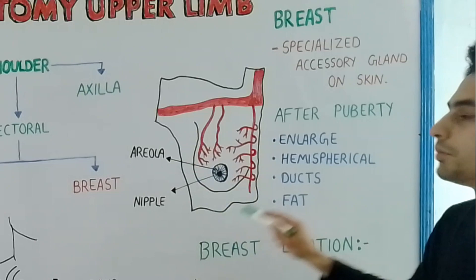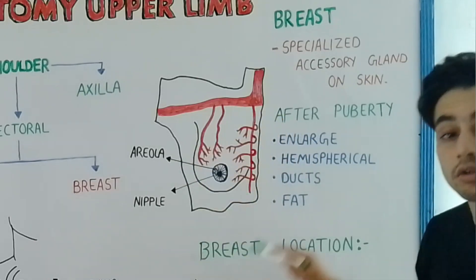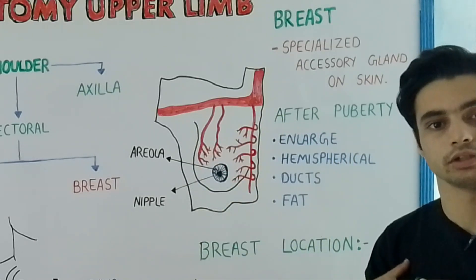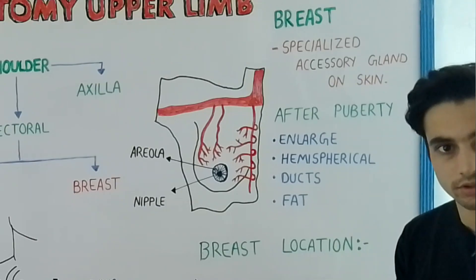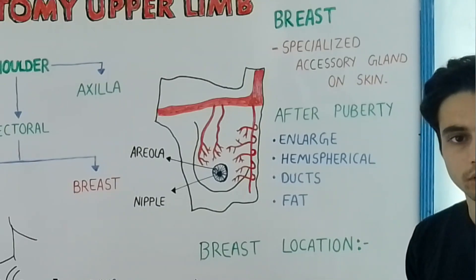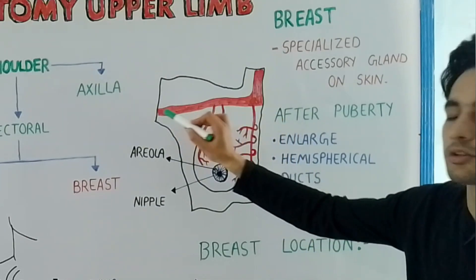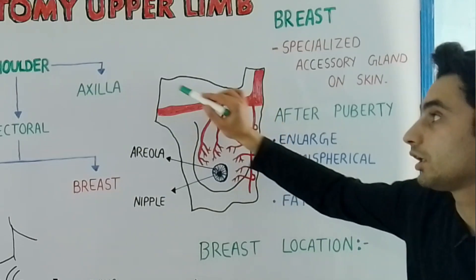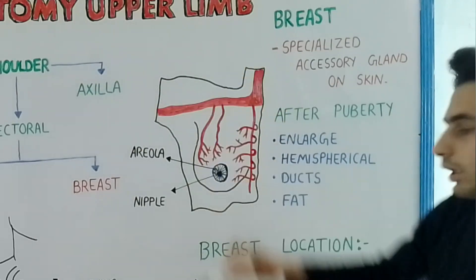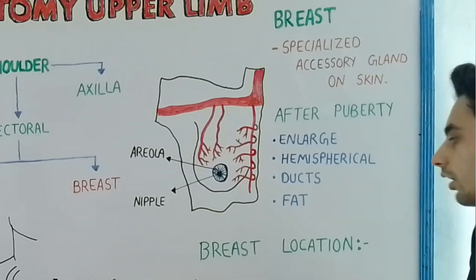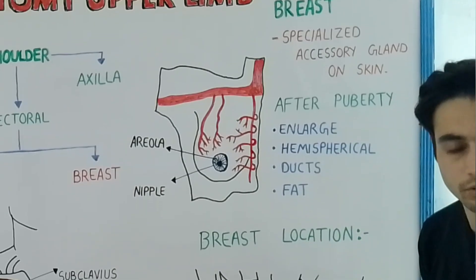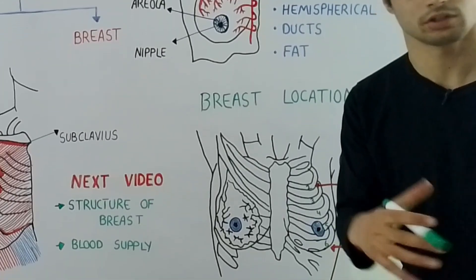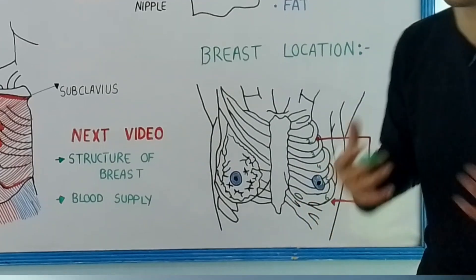Strictly speaking, the breast is not part of the upper limb — it is part of the thorax. We study it in upper limb anatomy because the blood supply and lymphatic drainage are associated with the upper limb. Now, the location of the breast is not fixed; it is variable.